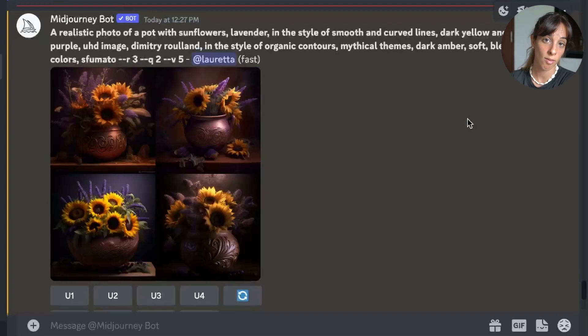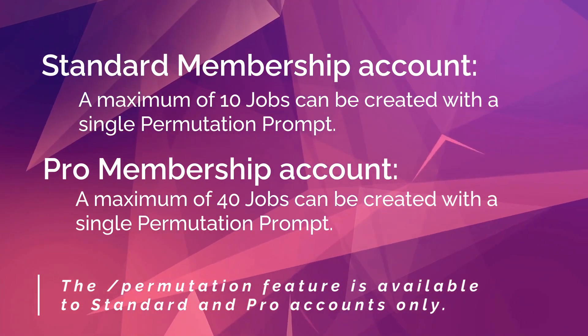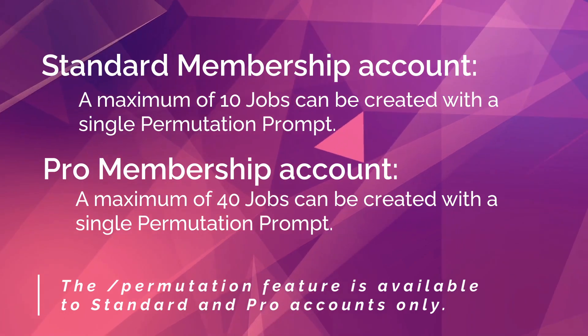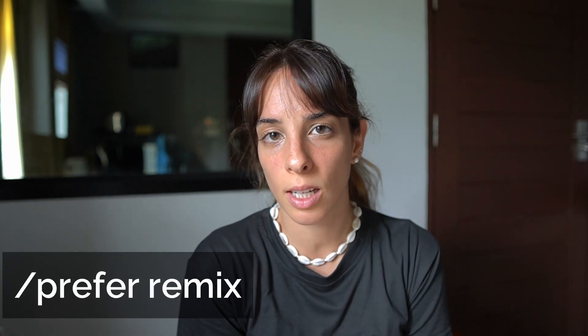The pro of this feature is that it saves you time if you want to create different options for the same prompt. The con is that it's not available to everyone — just those with standard or pro subscription. Now let's have a look at the last feature, which is Permutation. This is the one I like the most because it allows you to generate variations of a prompt. Like Repeat, it can only run in fast mode and is restricted to a max of 10 runs for standard and 40 for pro accounts.